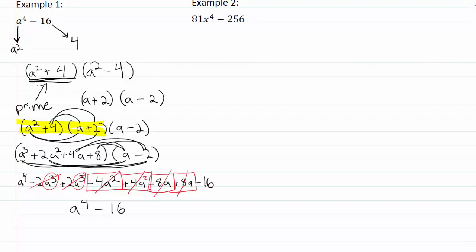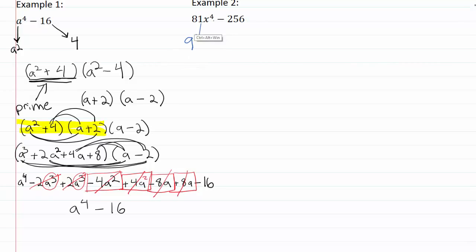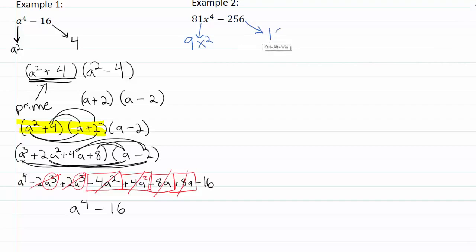So now let's go ahead and take a look at example two. We've got eighty-one x to the fourth. The square root of eighty-one is nine, and the square root of x to the fourth is x squared. The square root of two fifty-six is going to be sixteen.